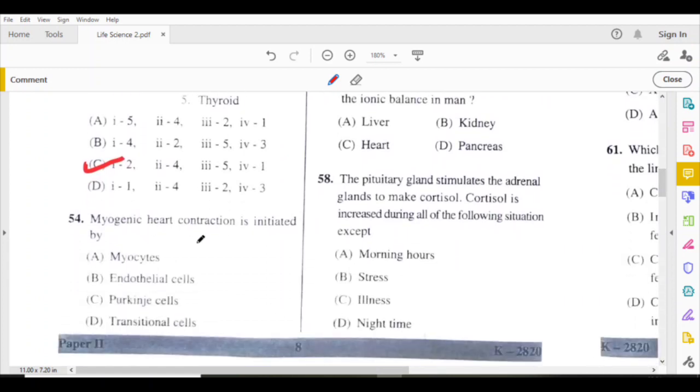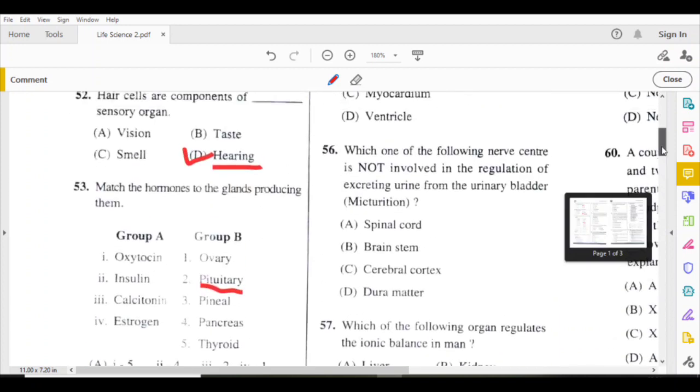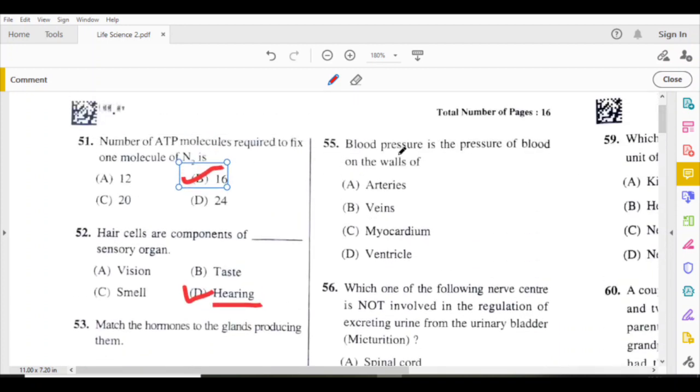Myogenic heart contraction is initiated by Myocytes. Blood pressure is the pressure of blood on the walls of arteries.